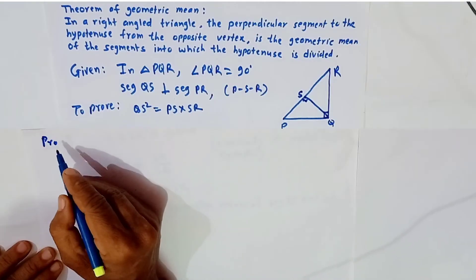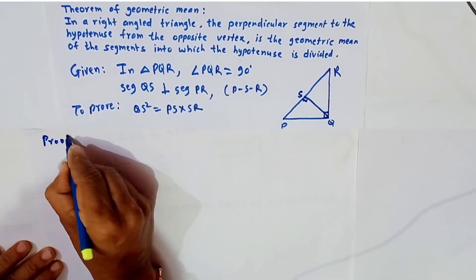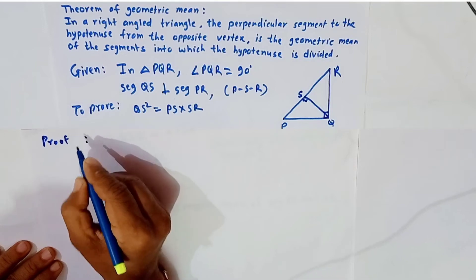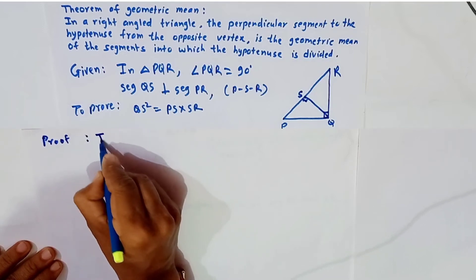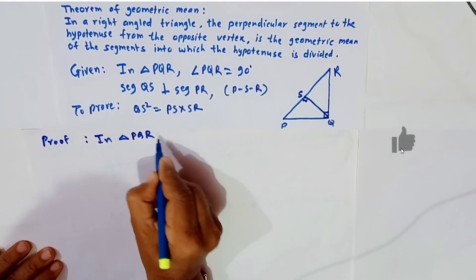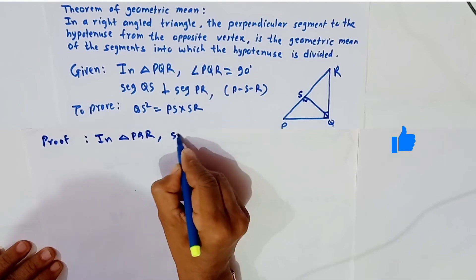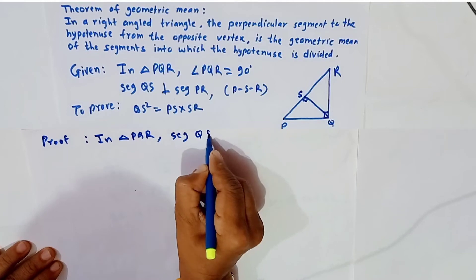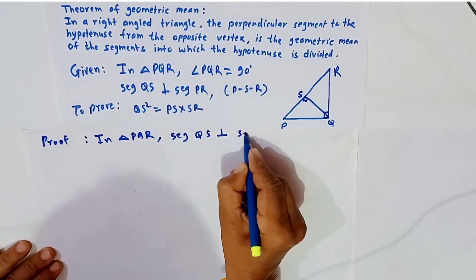Friends, now we see the proof of this theorem. We are given in triangle PQR, segment QS is perpendicular to segment PR.